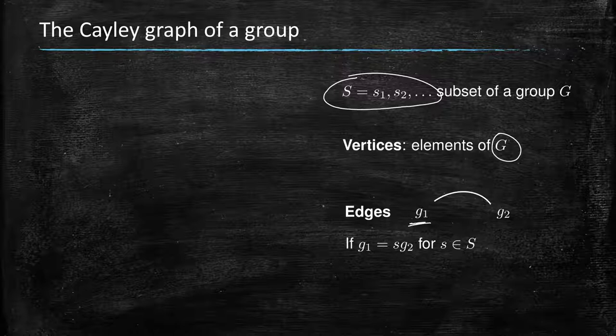We have an edge between two elements g1 and g2 if and only if there is an s in S such that g1 is equal to s times g2.